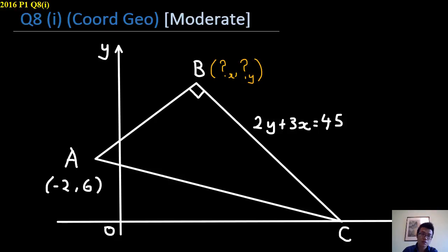8 part 1 gives you point A, point C at the x-axis, so x is unknown, y is 0, a 90 degree angle, and an equation.